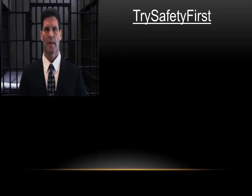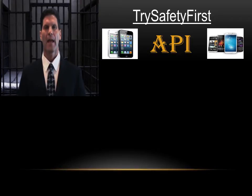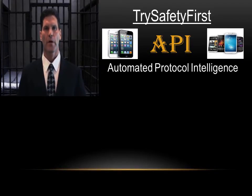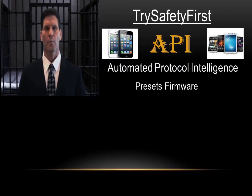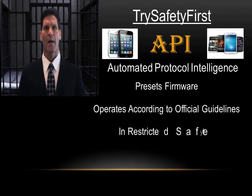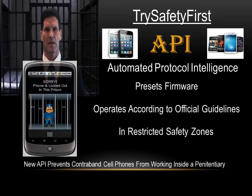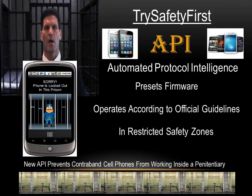Hi, my name is John Fisher. I'm the CEO of TriSafety First. At TriSafety First we develop API for cell phones. API is short for Automated Protocol Intelligence. API presets a phone's firmware so the device will operate according to official guidelines when operating within a restricted safety zone. This video demonstrates our latest API advancements which prevents contraband cell phones from working when in the restricted areas of a prison facility.